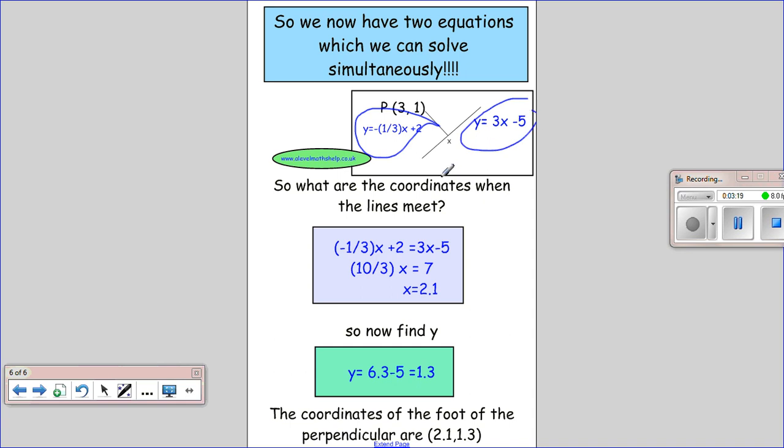What I do is put the y's equal, so I get (-1/3)x+2=3x-5. After sorting out, this gives me an x value of 2.1, and then I just put that back into one of these equations.